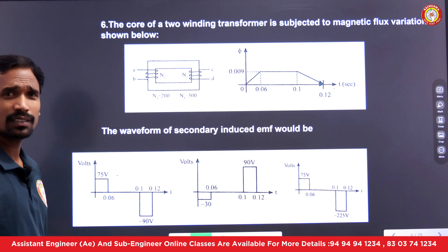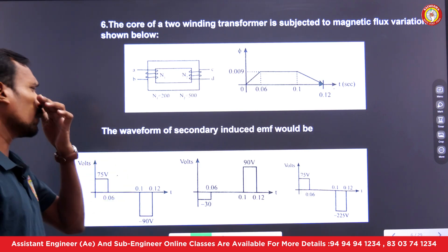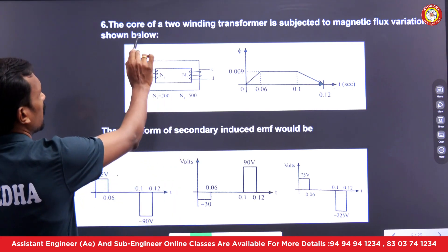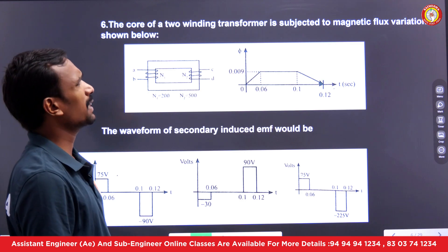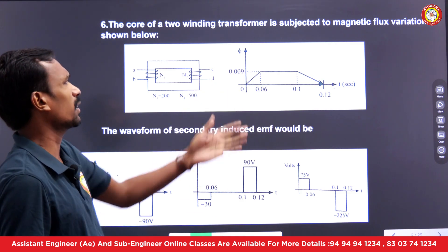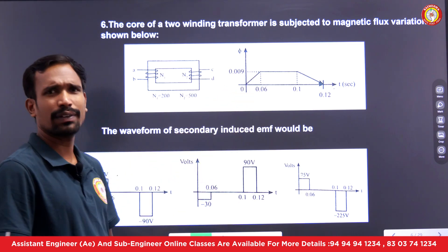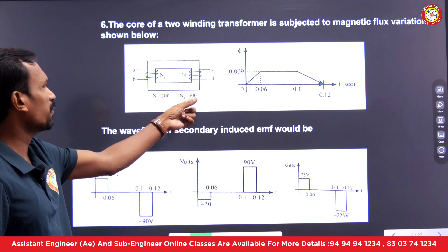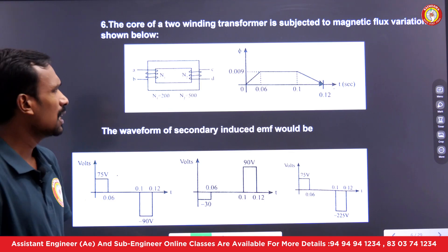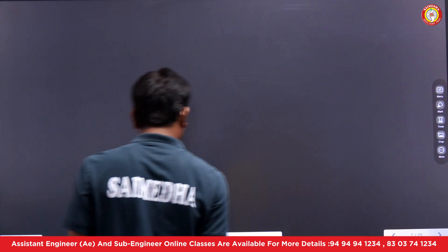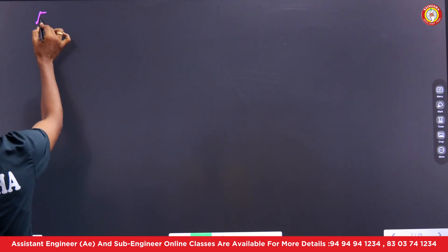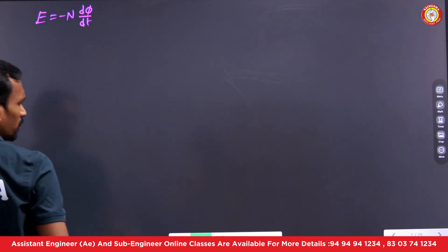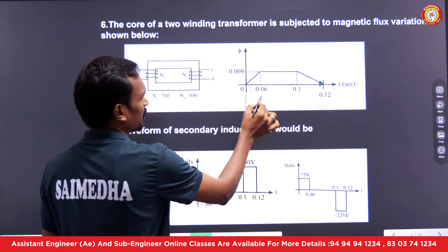Let's look at this question — a previous GATE question, also important for other competitive examinations. The core of a two-winding transformer is subjected to magnetic flux variation shown in the figure. Given the flux waveform, we need to find the secondary induced EMF. The secondary has 500 turns. The formula for EMF is: E = −N · (dΦ/dt). We need to calculate the EMF in three intervals.